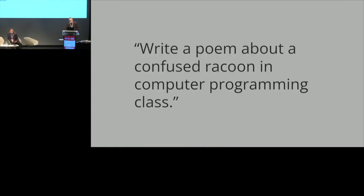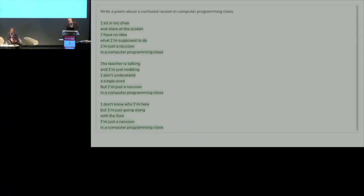The same algorithm is a general purpose algorithm — that's why it's GPT-3. So here it is writing a poem about a confused raccoon in a computer programming class: 'I sit in my chair and stare at the screen, I have no idea what I'm supposed to do, I'm just a raccoon in a computer programming class.' I won't read the rest, but it's a short, funny poem written by an AI.